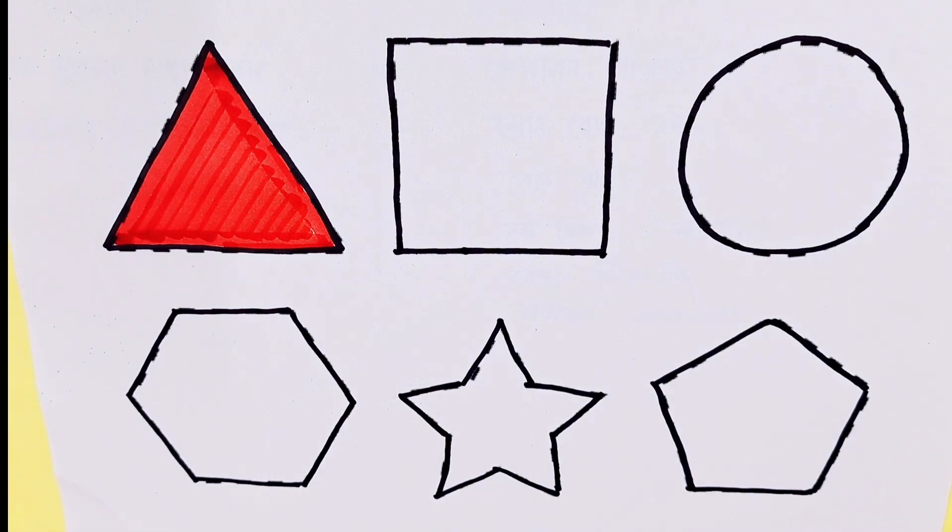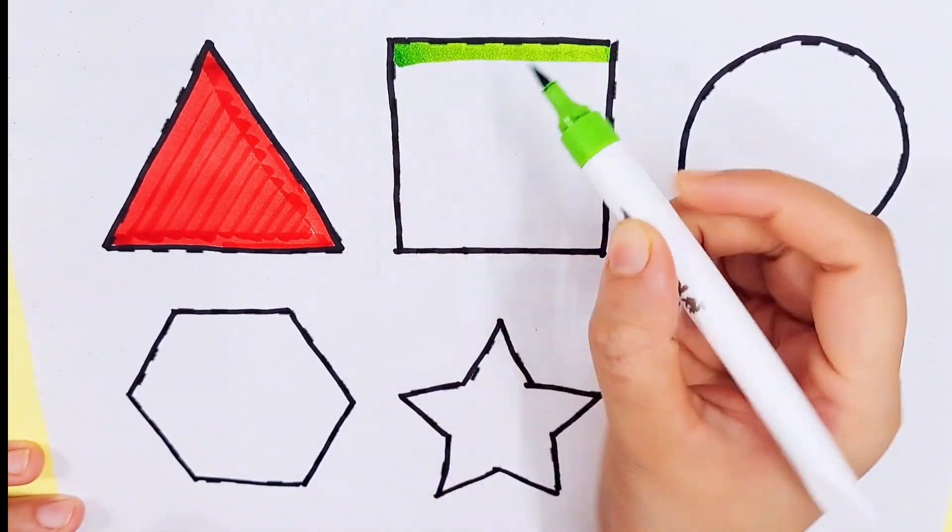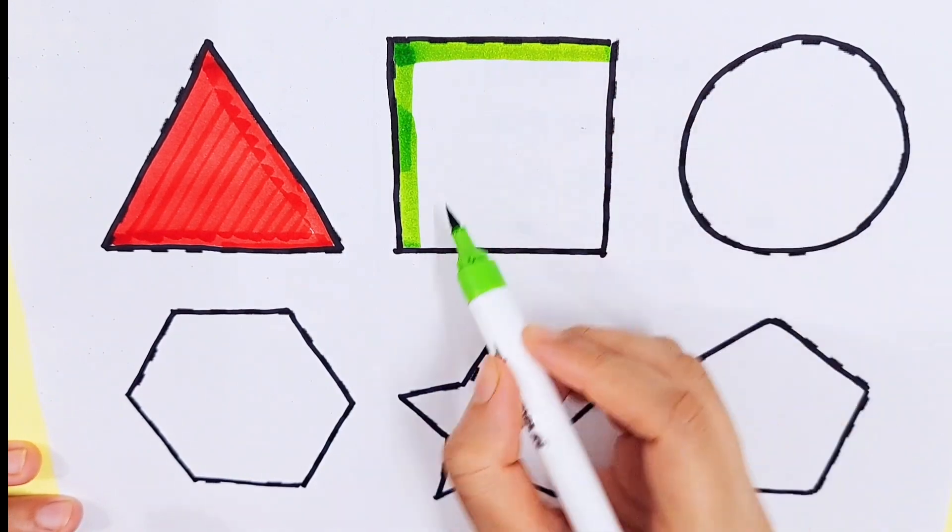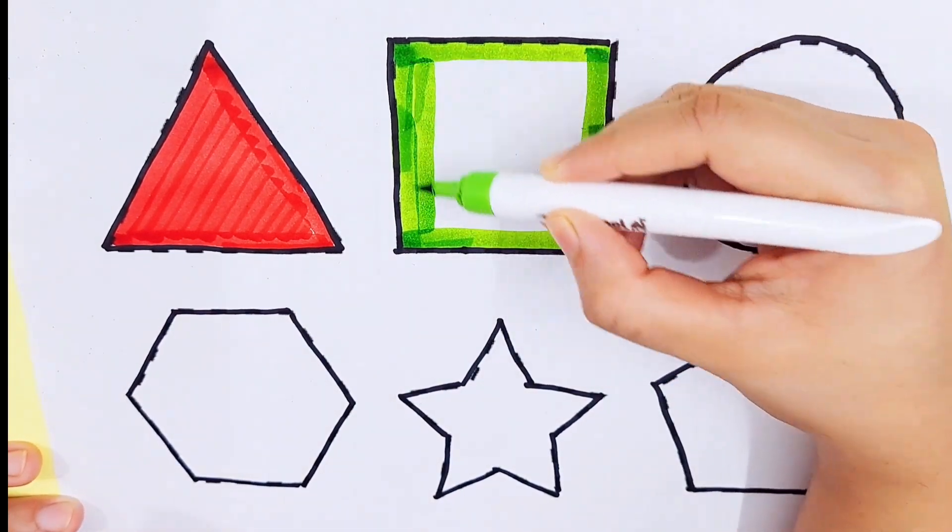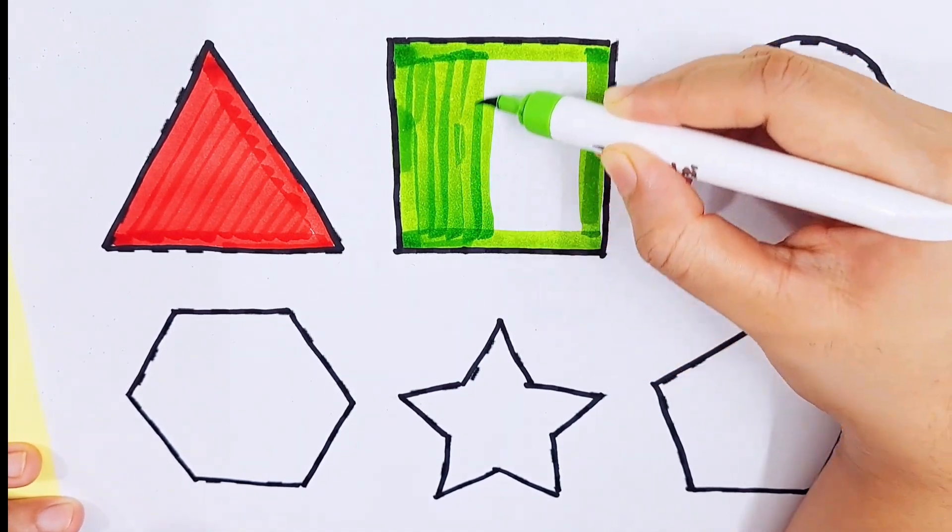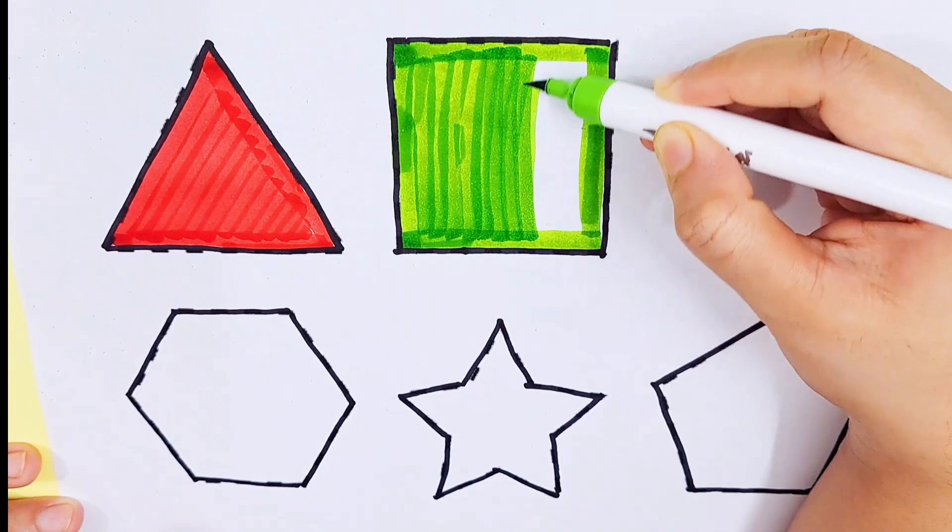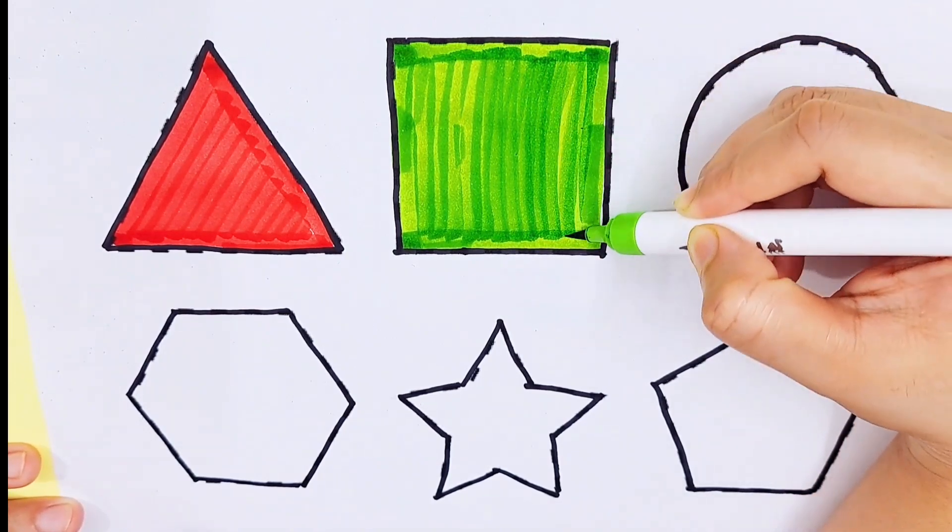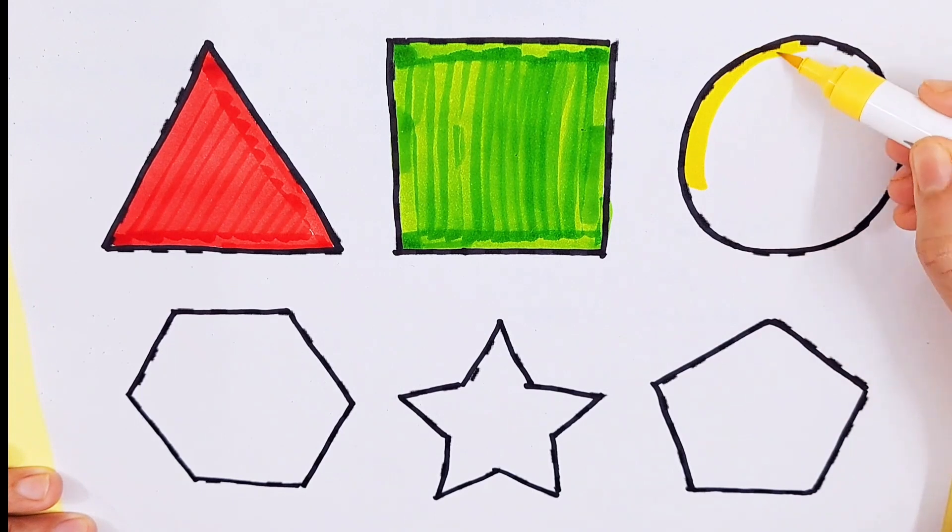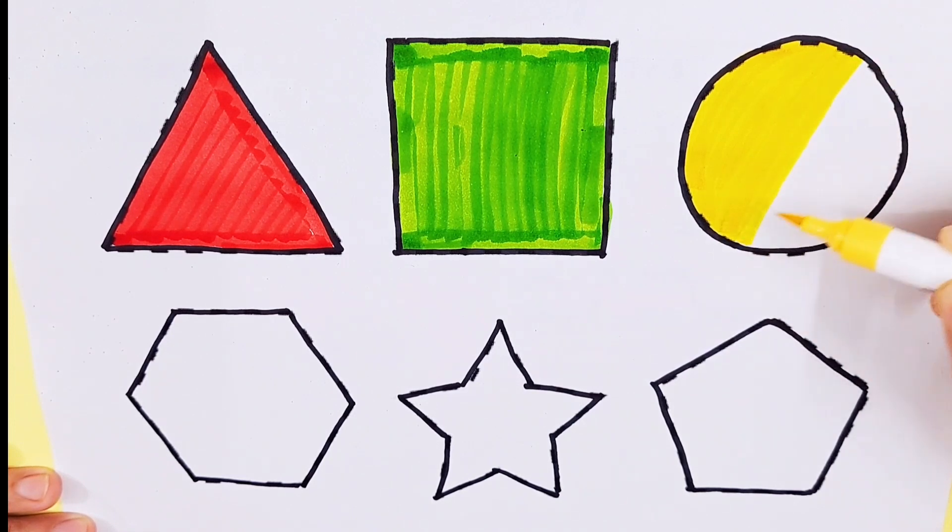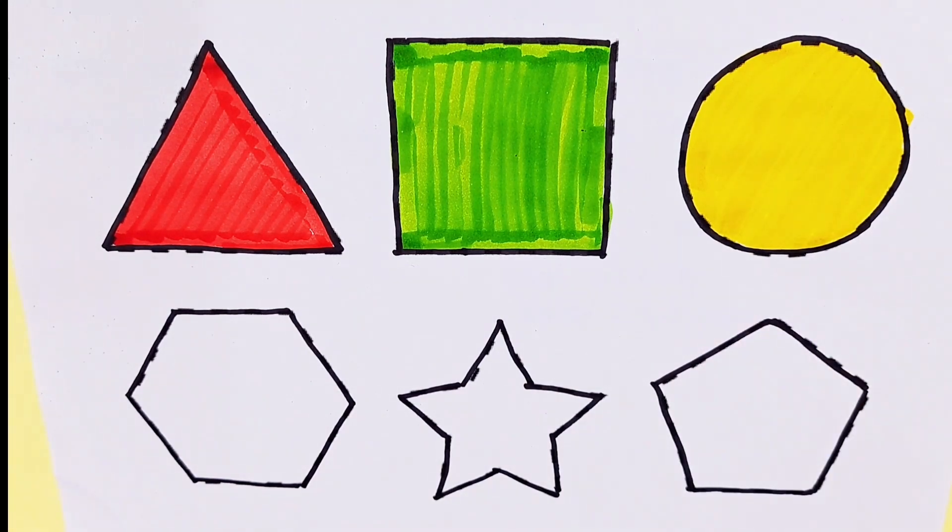Triangle, light green color. Square, hexagon. White color, circle, violet color.